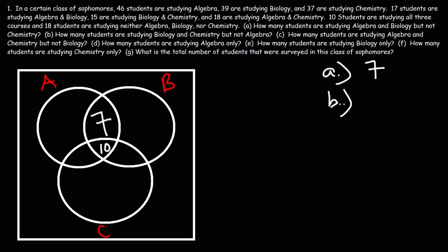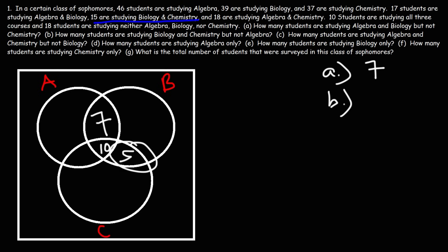Part B: how many students are studying biology and chemistry but not algebra? We're looking for the section that is biology and chemistry, not including algebra. We have 15 students studying biology and chemistry total. If we subtract the 10 studying all three, 15 minus 10 is 5. So 5 students are taking biology and chemistry but not algebra. The answer to Part B is 5.